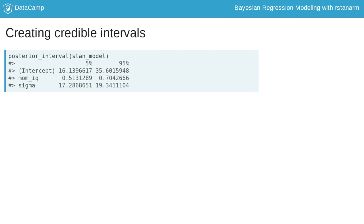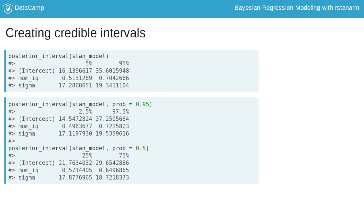In rStanArm, we can easily calculate credible intervals using the posterior_interval function. By default, rStanArm provides the 90% credible interval, but we can create 95% or 50% credible intervals by supplying the desired interval to the prob argument.